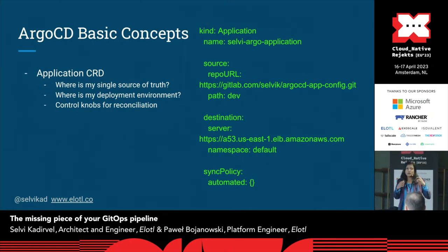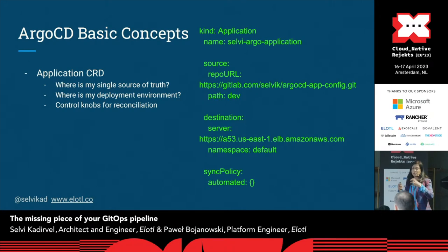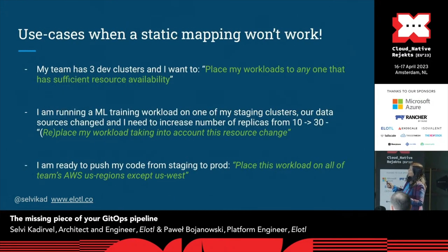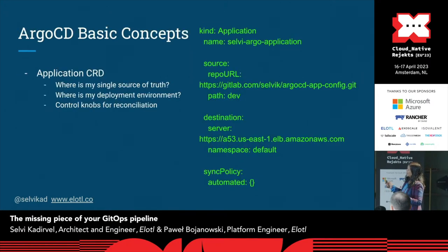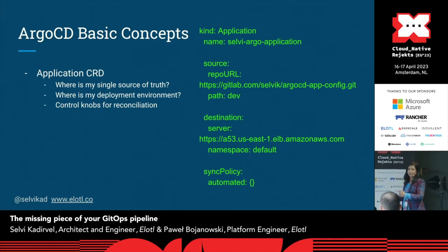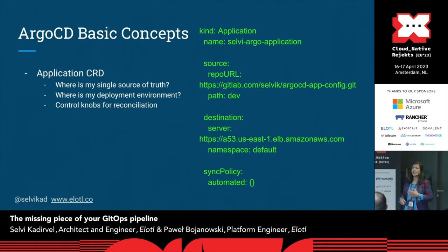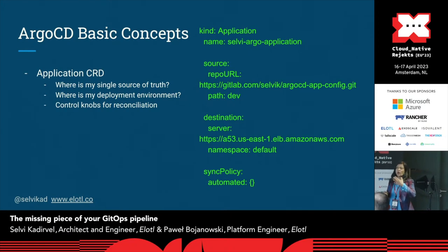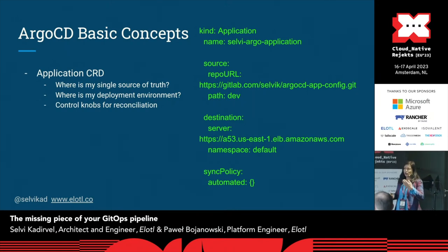We've chosen Argo CD, and a core construct within it is the Application CRD. It specifies three main aspects: where is my single source of truth — your Git repo; where is my deployment environment — your Kubernetes cluster's API server; and multiple control knobs for reconciliation, such as an automated sync policy that automatically deploys as soon as a Git PR is pushed, through a periodic poll whose time interval can be defined.